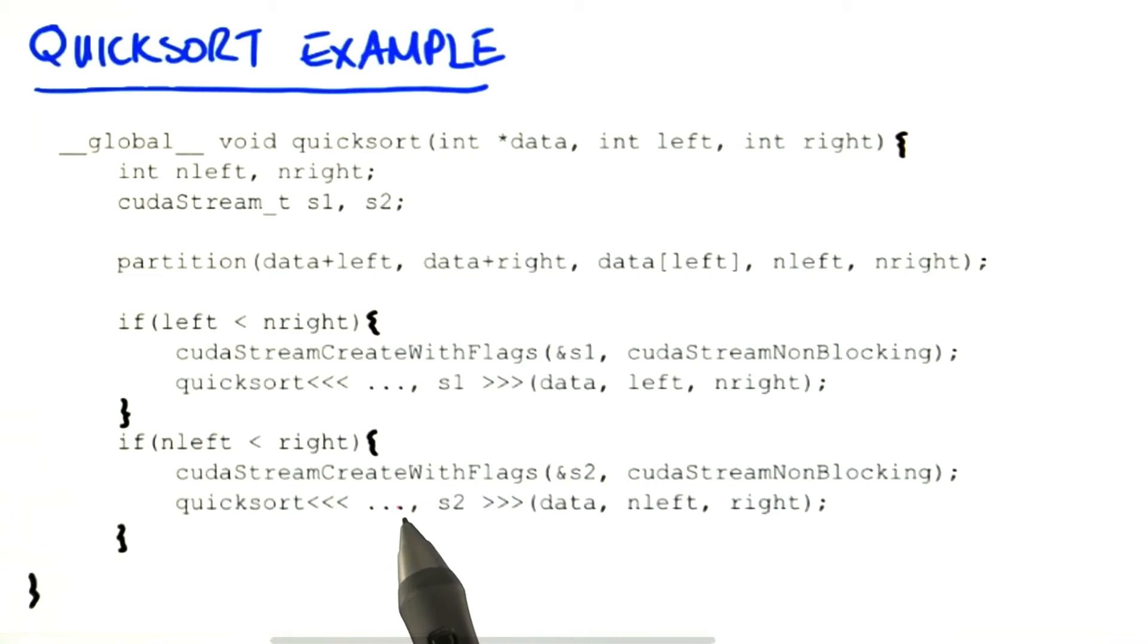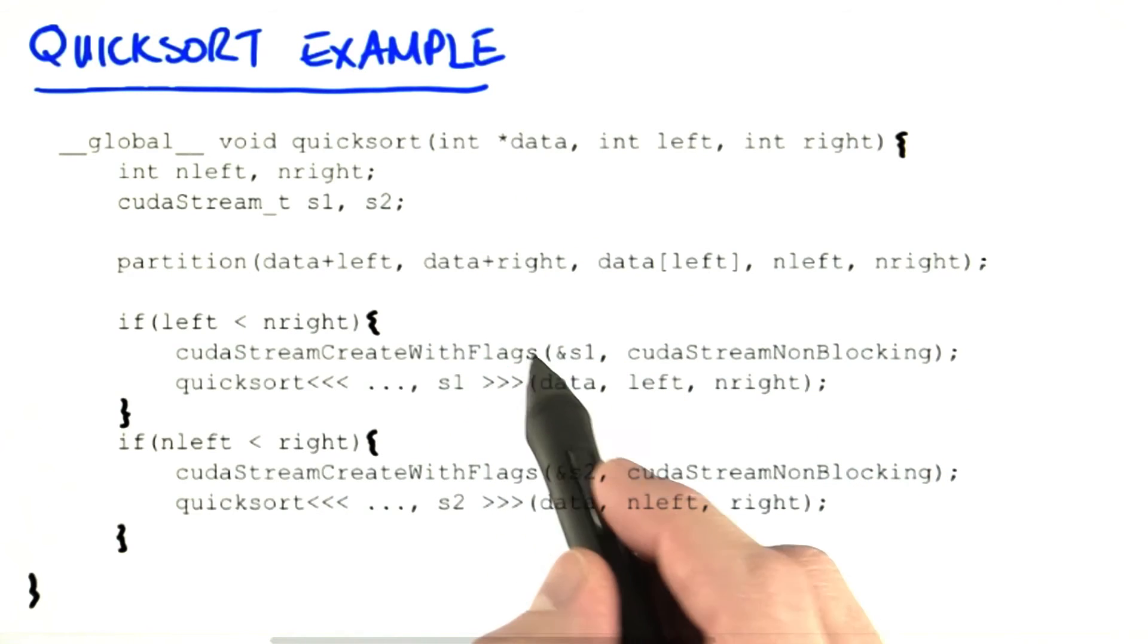Here are my launches inside my kernel of my next quicksort kernels. So my code's nice and simple, and the kernel launches its two children into separate streams.